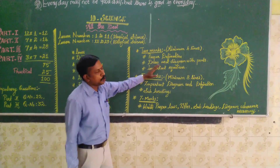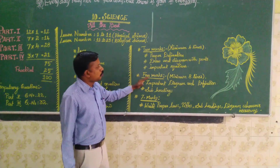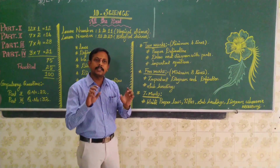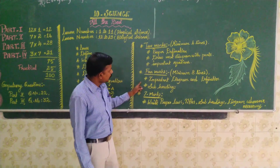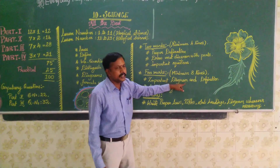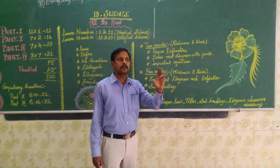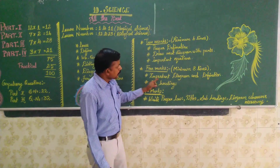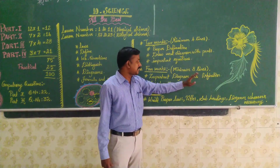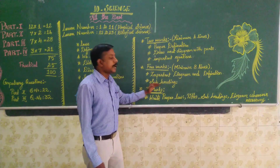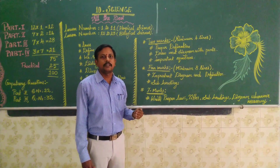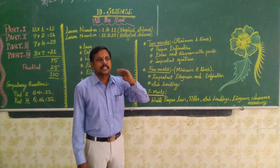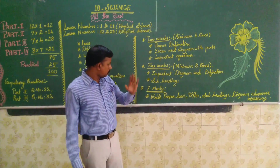Then 4-marks questions: minimum 8 lines you need to write. Important diagrams and definitions — wherever they ask for diagrams in the 4-marks questions, you have to draw diagrams. The exact definition you have to write. Then subheadings — what subheadings are given. Diagrams are very, very, very important. Headings, subheadings, and parts — you have to write all of these.